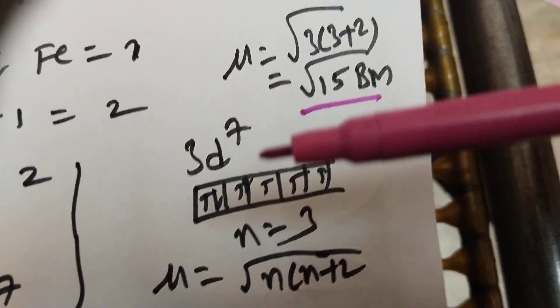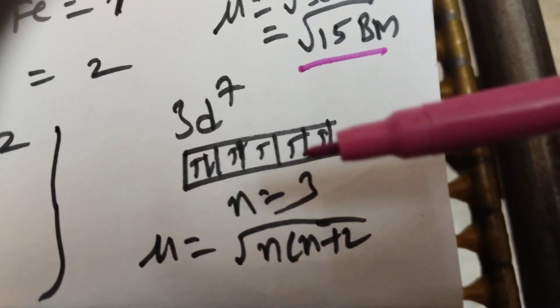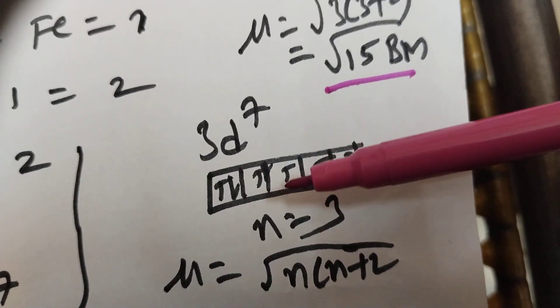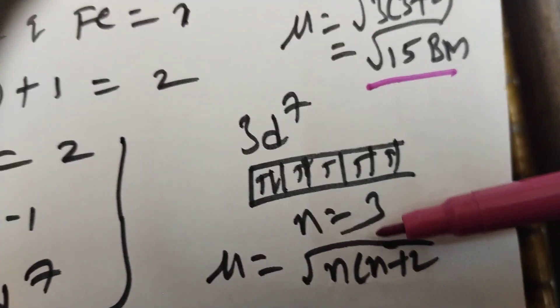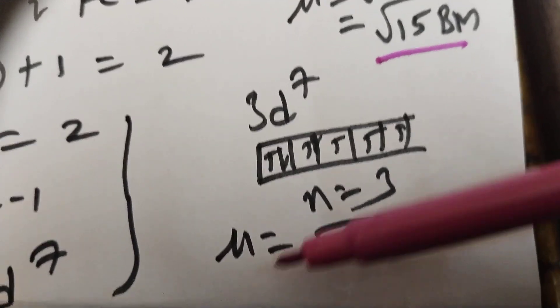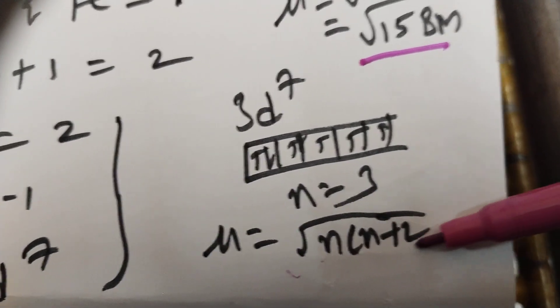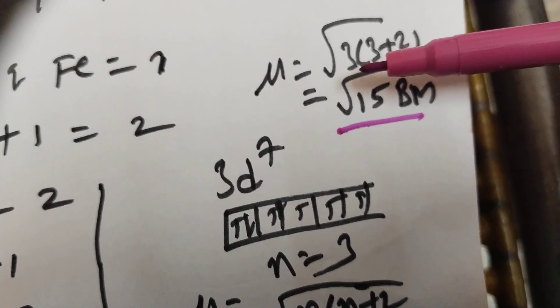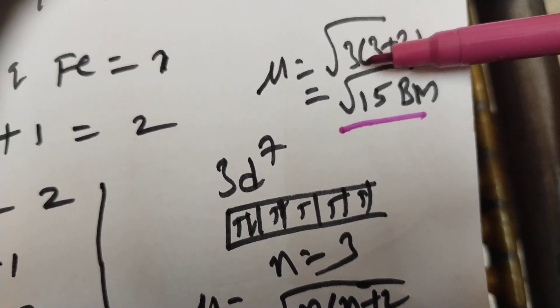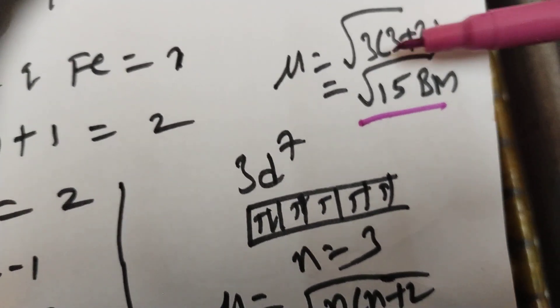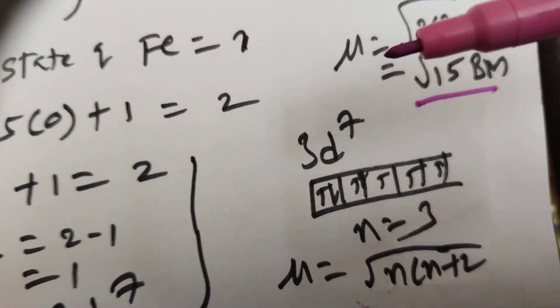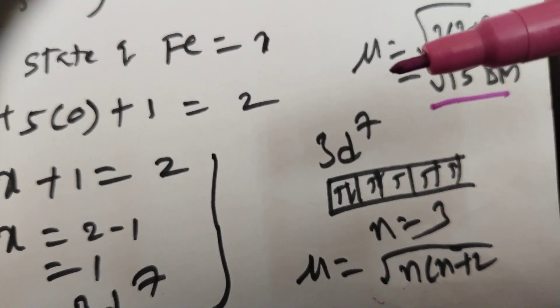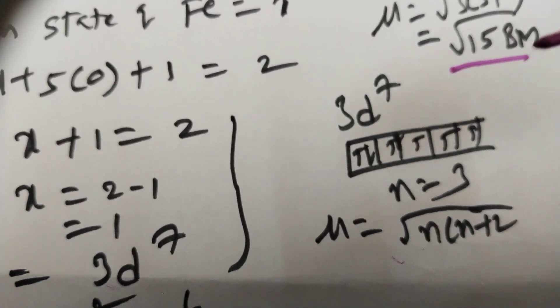Please note it, 3d7. If you observe very keenly, 3d7, how many unpaired electrons are there? 1, 2, 3. If you know the number of unpaired electrons, you can easily write mu which equals root of N into N plus 2. If you substitute N equals 3 into 3 plus 2, 3 plus 2 is nothing but 5. 5 into 3, root 15 Bohr magneton is the right answer for brown ring complex magnetic moment, root 15.